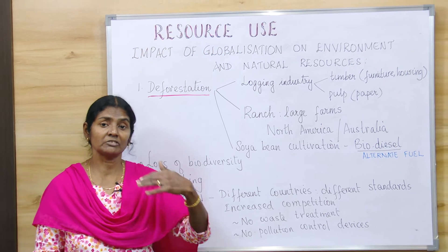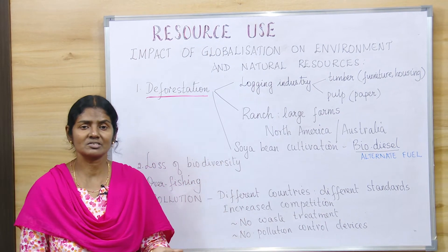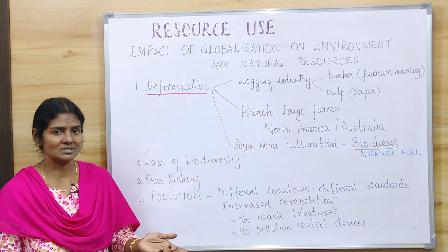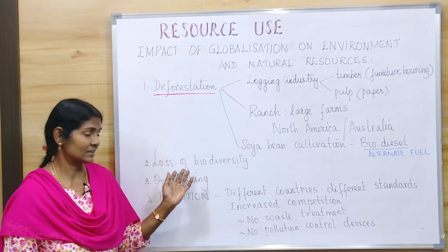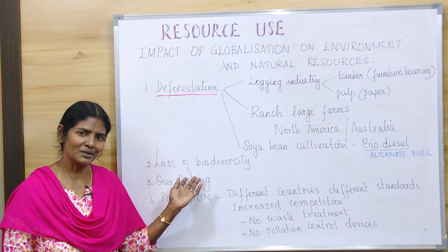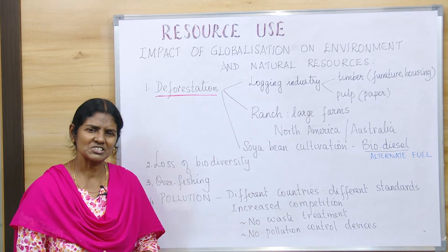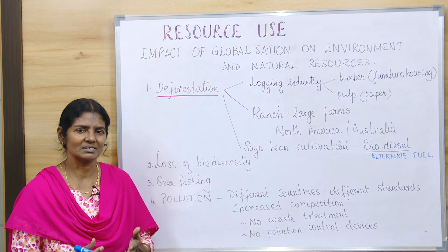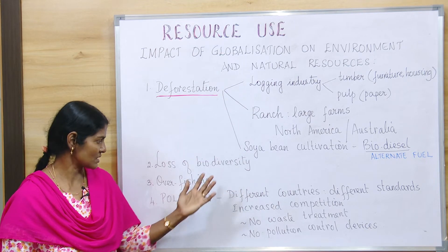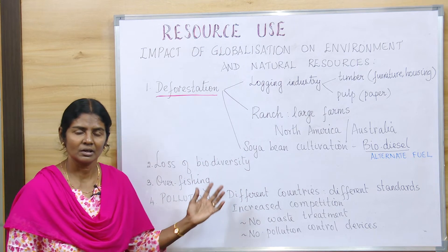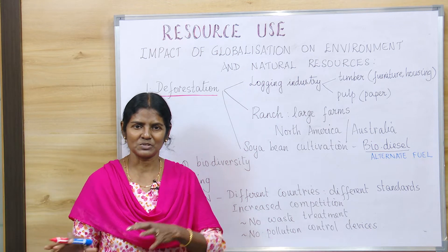Besides these, there are also developmental projects like rail projects and road projects where trees are cut down, as well as housing and shelter construction. When the forests are gone, we lose precious animals, birds, and plants — that is the loss of biodiversity due to deforestation.